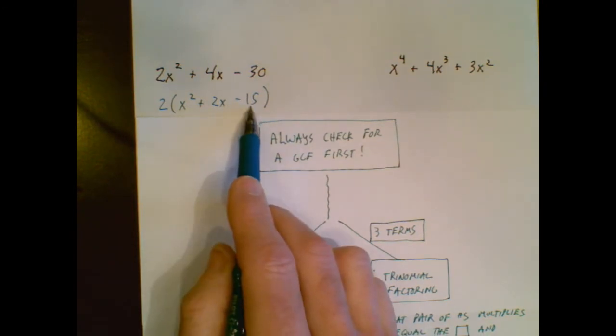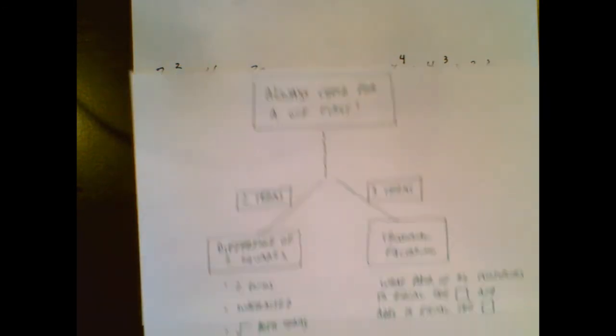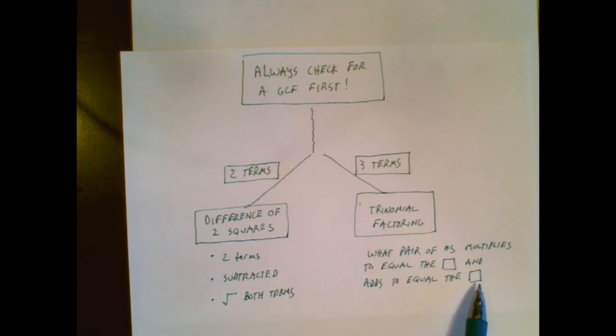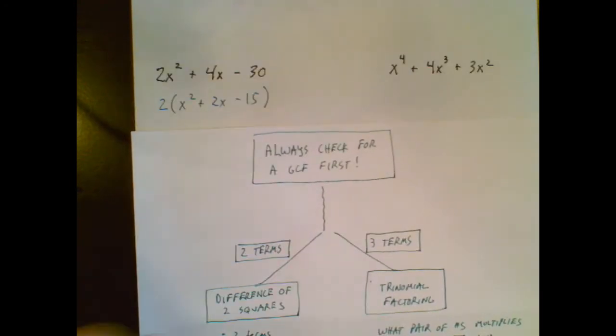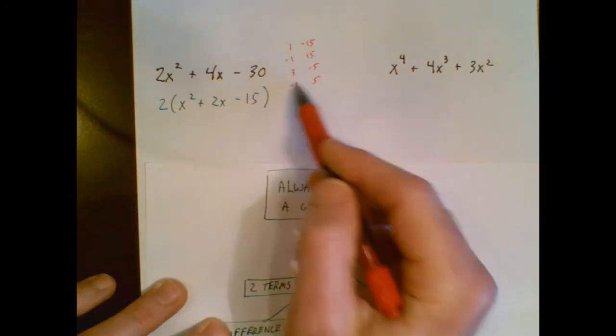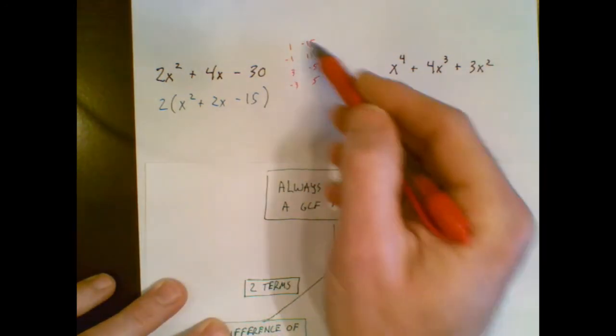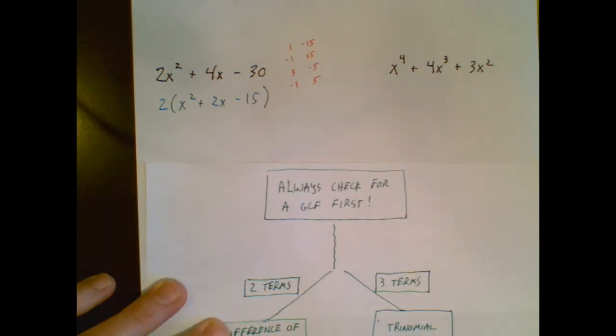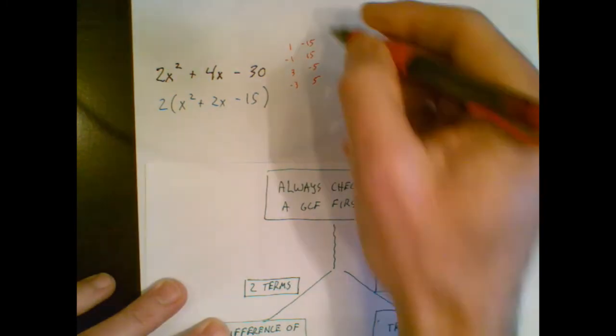There are three terms. So now what I need to ask myself is, what are all the numbers that multiply to negative 15, and add to equal positive 2? So all the numbers that multiply to negative 15 are up there.